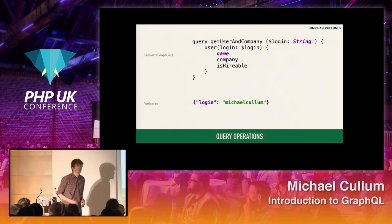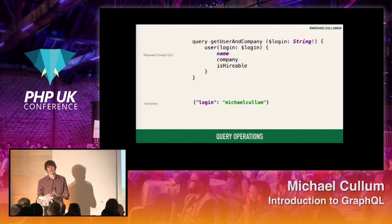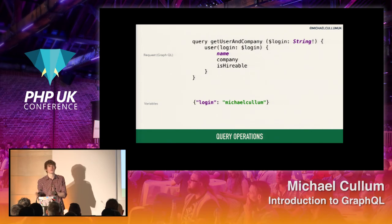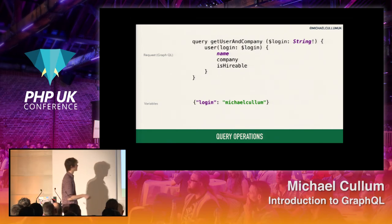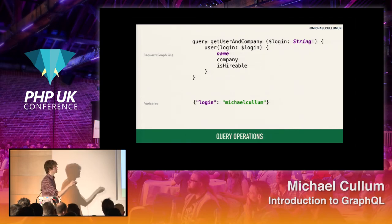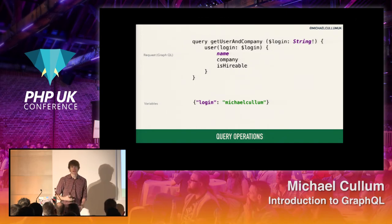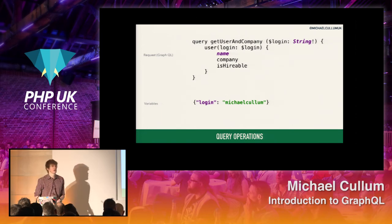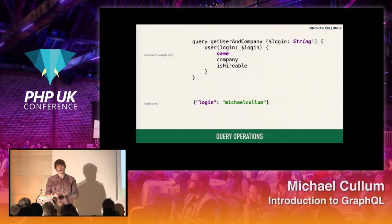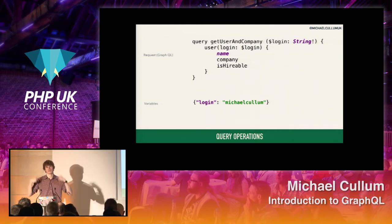An exclamation point means that an argument is required — it will simply error if it's null. If I excluded this, then null would be passable. The way that GraphQL handles null is that there is one null — everything is that same null. It's not like each individual type has its own null version, so it's not like the null of an integer would be zero. It's just null. So I grab the login, I want a string, and then I say I want the user for this particular login — I want the name, company, and is hireable. And then separately I give it another body of text which is the variables. They're two completely separate things that you send in your request.